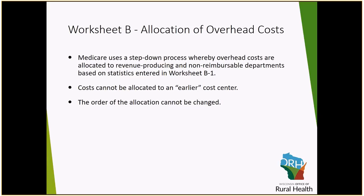A helpful tip to consider when reviewing and preparing your cost report is to consider the last time that the statistics were updated. For example, square footage: has the organization evaluated and updated the square footage of the cost centers on an annual basis? If there have been any additional building projects completed or renovations made to the current facility, have those changes been incorporated into the square footage on your cost report?